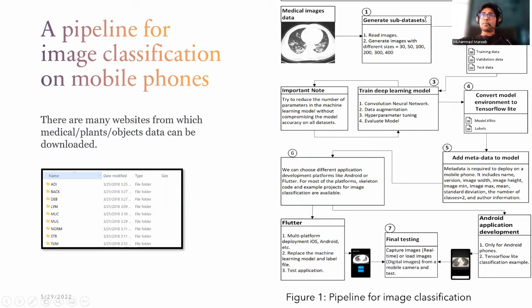The second step is to divide the dataset into training, validation, and test sets. At this step, it is compulsory to set aside a few images for real-time testing or for when you are going to test the model on a mobile phone.